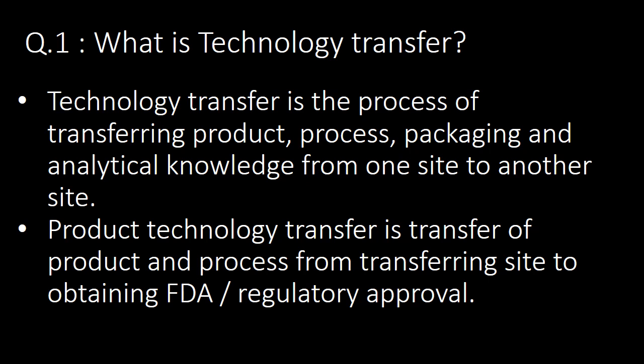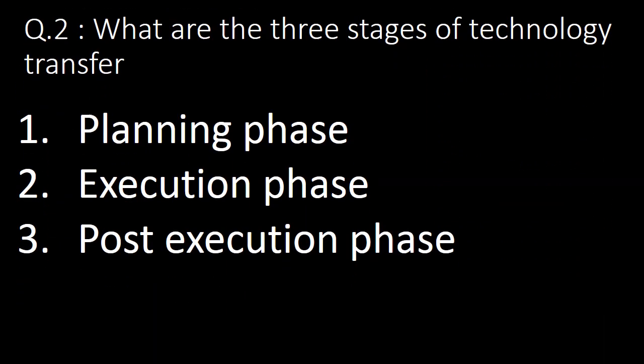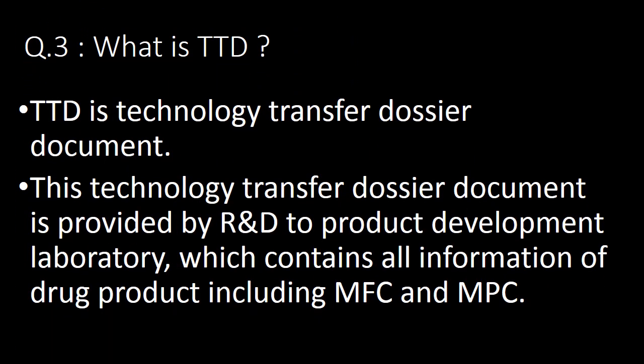Product technology transfer is the transfer of product and process from the transferring site to obtain FDA or regulatory approval. The next question: what are the three stages of technology transfer? The three stages are the planning phase, execution phase, and post-execution phase.